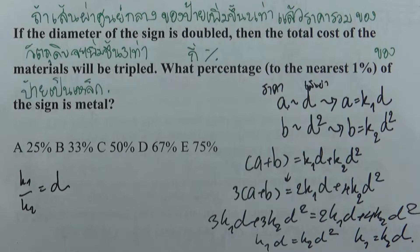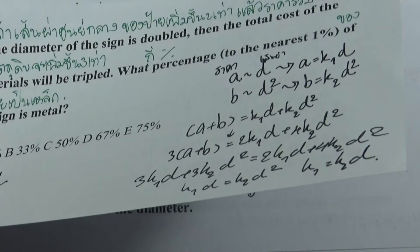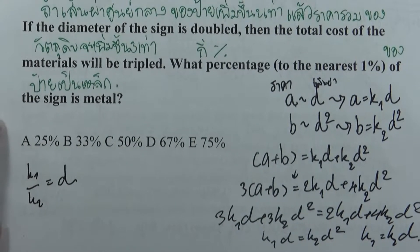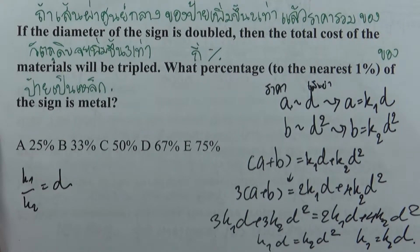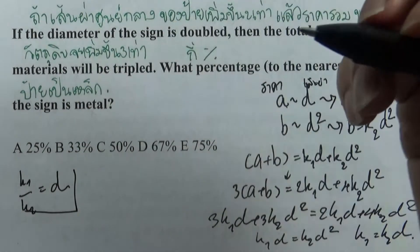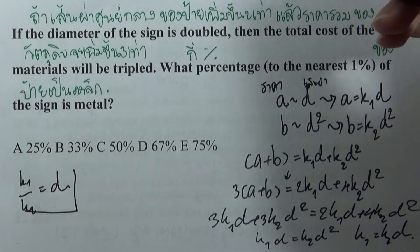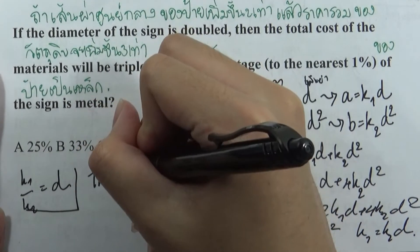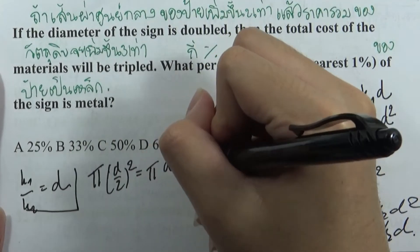จากนั้น เมื่อเรารู้ว่า K1/K2 = D แล้ว ป้ายเนี่ยเป็นวงกลม เพราะฉะนั้นพื้นที่ของมันจะเป็น π·(D/2)² = π·D²/4.